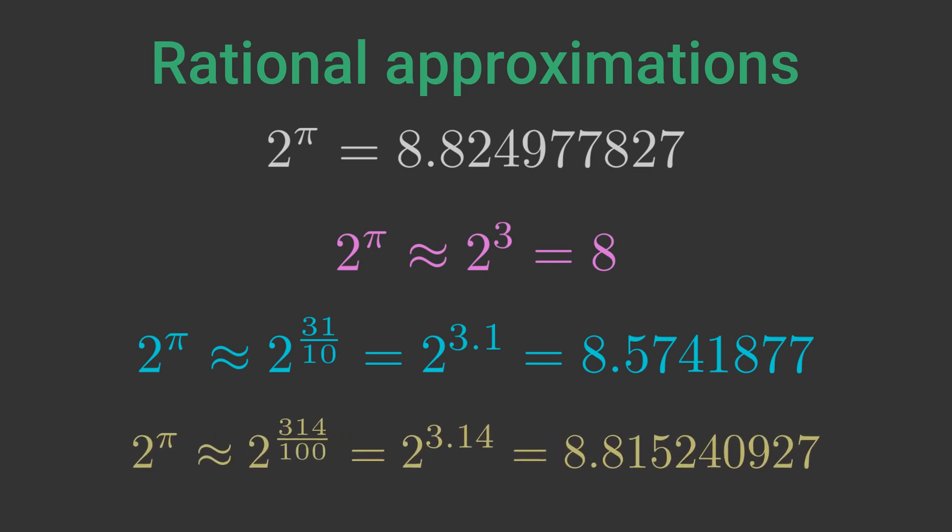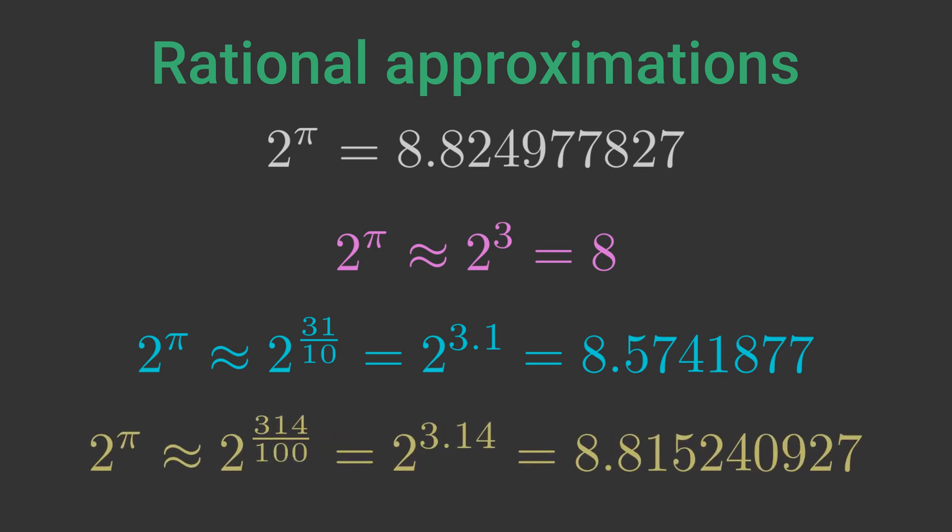Even better would be 314 over 100 or 3.14, which is also a rational number that is even closer to π. We could choose a rational number that is equal to π to p decimal places. For a large enough value of p, the approximation can get as close to π as we like.